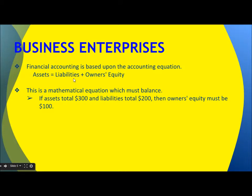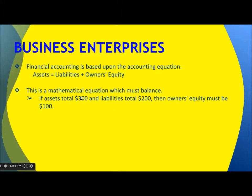Financial accounting is based on the accounting equation: Assets = Liabilities + Owner's Equity. This mathematical equation must always be balanced. For example, if assets are $300 and total liabilities are $200, then owner's equity must be $100 — because $200 plus $100 equals $300, which equals the asset value.